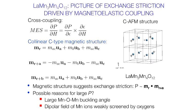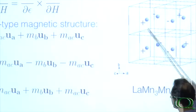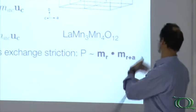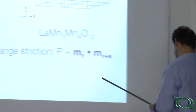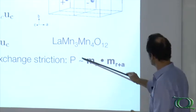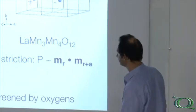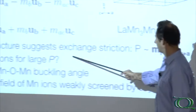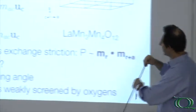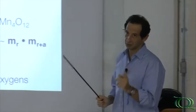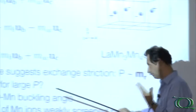We have this collinear C-type magnetic structure evidenced by neutrons, corresponding to these values of the spins at neighboring sites — going from R to R+A, and from R to R+B. With a little calculation, you end up realizing that the dominant mechanism is indeed exchange striction, where polarization is proportional to the scalar product of two neighboring ion moments. The large buckling angle should enhance the next nearest neighbor interaction, so the magnetic striction is probably enhanced by this angle. Also, since oxygens screen weakly the dipolar field because oxygen cannot move, the polarization remains unscreened and therefore is larger.